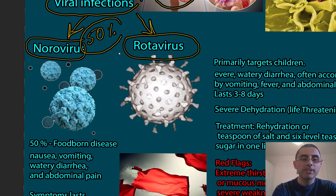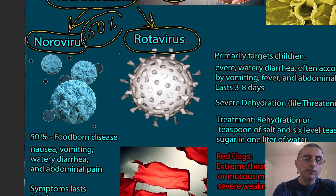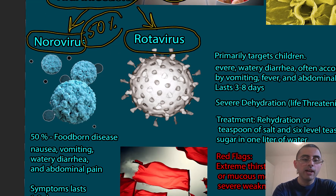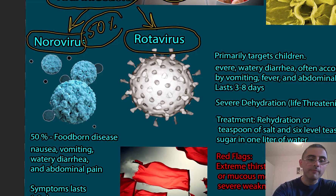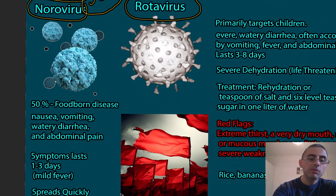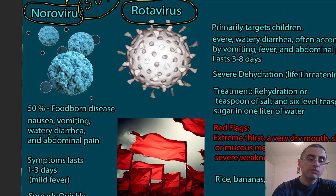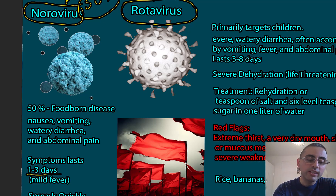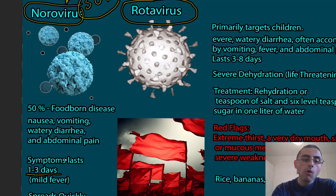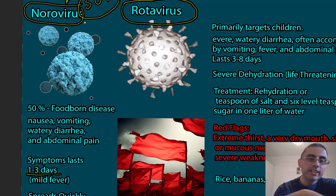The most common symptoms of norovirus are nausea, vomiting, watery diarrhea, abdominal pain, and sometimes low-grade fever. Symptoms usually last one to three days. This disease is usually self-resolving, and it affects all age groups — not only kids, but also adults.